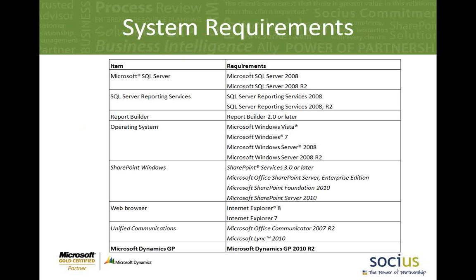So here are our system requirements. It's pretty standard. If you're using GP, you probably have most of this already. I have two things in italics: SharePoint Windows, which is more if you're deploying your reports using SharePoint — that's the version you need for Business Analyzer to access those. And there's also a component that allows you to add contacts and communicate using Office Communicator or Microsoft Lync directly from a report or chart. Those are in italics because they're optional, depending on how you choose to deploy.